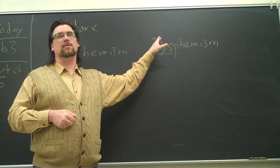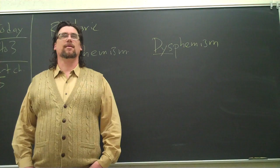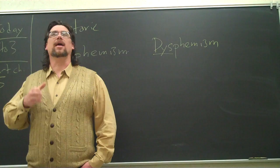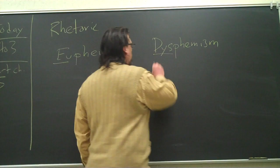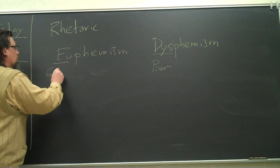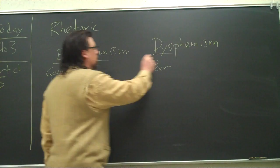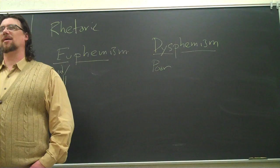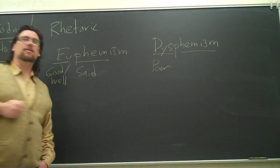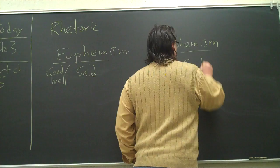This prefix, I think you guys can figure out what it means. Think about dysfunction. If you have a dysfunctional family, how would you describe that family? Not functioning, right. So dys means not or poorly. And eu means good or well. And phemism comes from a word that means to speak or to say.